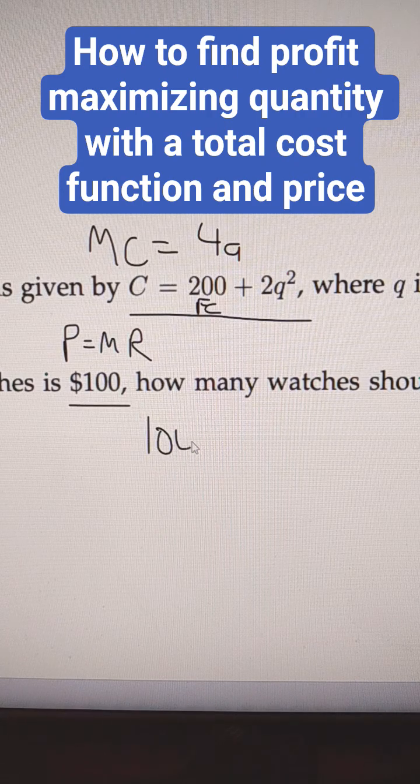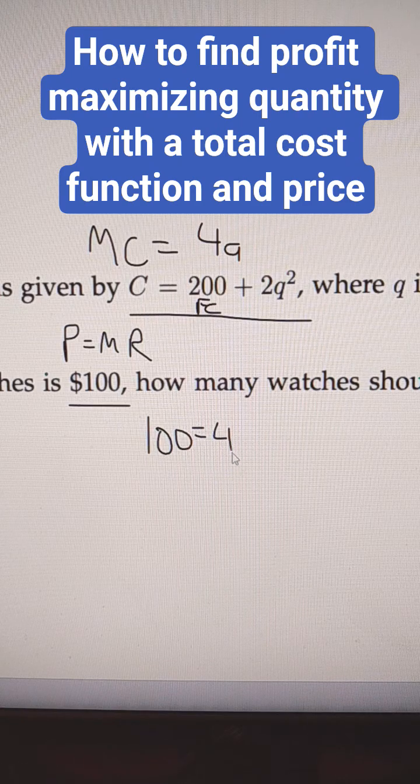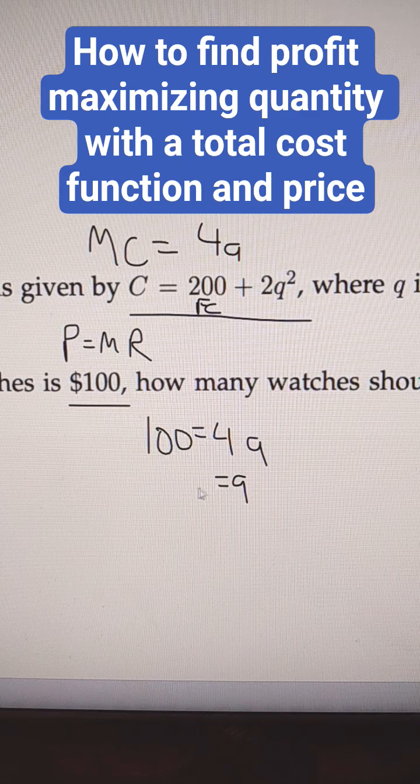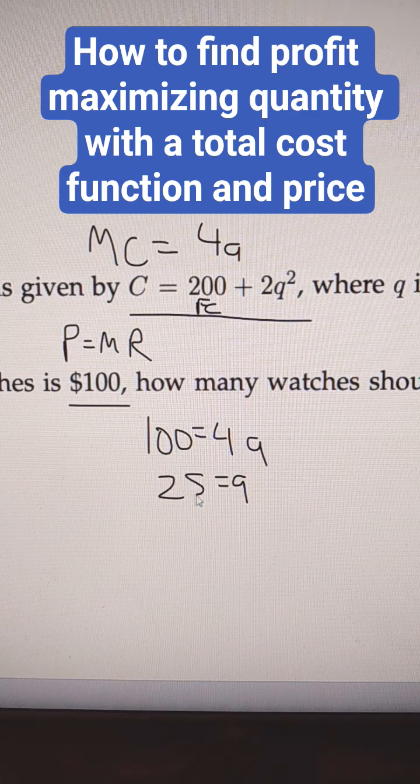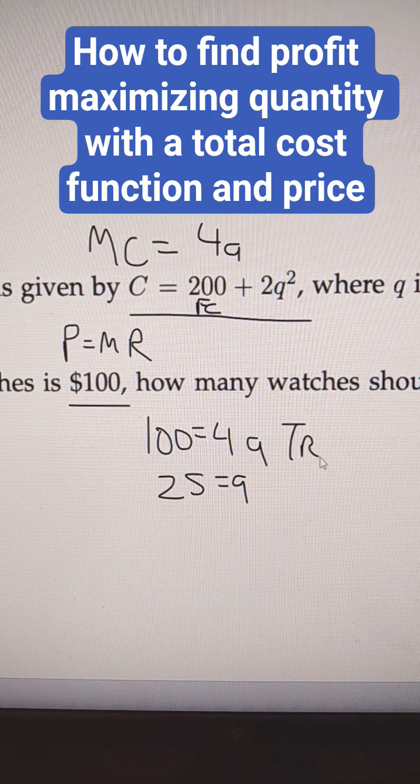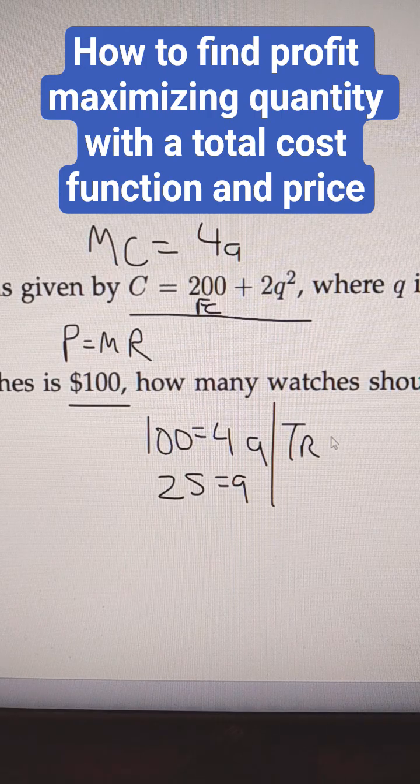So that would be 100 equal to 4Q for this firm. This firm is going to produce 25 of these products, and they're going to sell them for $100 each. So their total revenue then would be $2,500.